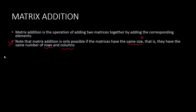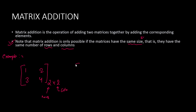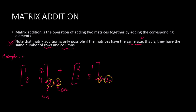Now let's take an example to understand matrix addition. We represent the matrix like this. Let's take a 2×2 matrix — the first number represents rows and the second represents columns. So let's take a 2×2 matrix with elements 1, 2, 3, 4, and another matrix with elements 2, 1, 2, 3. We can see that both have the same number of rows and the same number of columns.